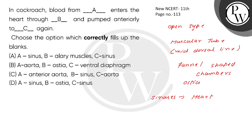Blood from the sinuses enters the heart through the ostia. We write this as: blood from sinuses → enters heart through ostia → is pumped anteriorly to the sinuses again.